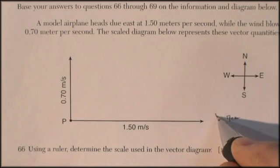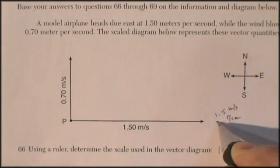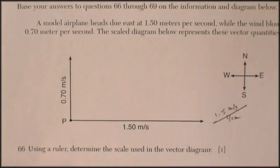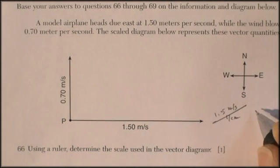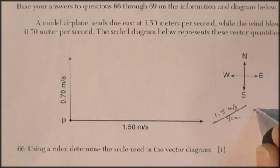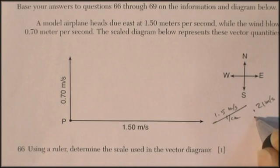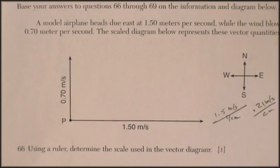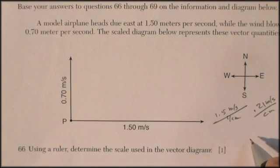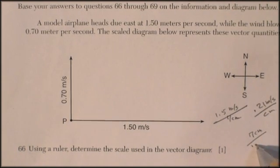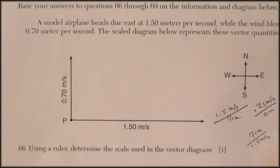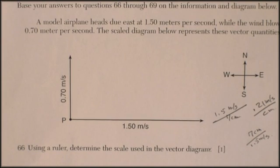So let's say 1.5 meters per second divided by 7 centimeters. And if I divide that out, I get like 0.21 meters per second per centimeter. Well, that seems a little odd for a scale. So let's just reverse them. Let's say 7 centimeters divided by 1.5 meters per second. Now I get about 4.6 centimeters per meter per second. Well, both of those look good to me. I think I'm going to go with the 4.6.